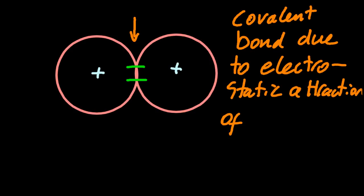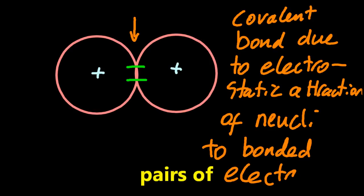So a covalent bond is due to the electrostatic, that's plus and minus, opposites attract, attraction of the nuclei to bonded pairs of electrons. And I bet the IB is going to be funny and make sure you say pairs of electrons. I can't spell nuclei. It's only been 35 years of using that word.